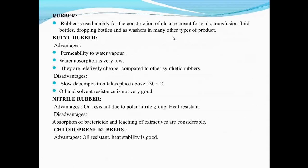Rubber is mainly used for the construction of closures — enclosures for vials. Vials are used for drugs administered in many doses, liquid injection preparations, transfusion fluids, bottles, dropping bottles, and as washers in many other types of products. Butyl rubber advantages: permeable to water vapor, water absorption, and relatively cheaper compared to other synthetic rubbers. Disadvantages: rubber decomposition around 130 degrees Celsius, and oil and solvent resistance is not very good.